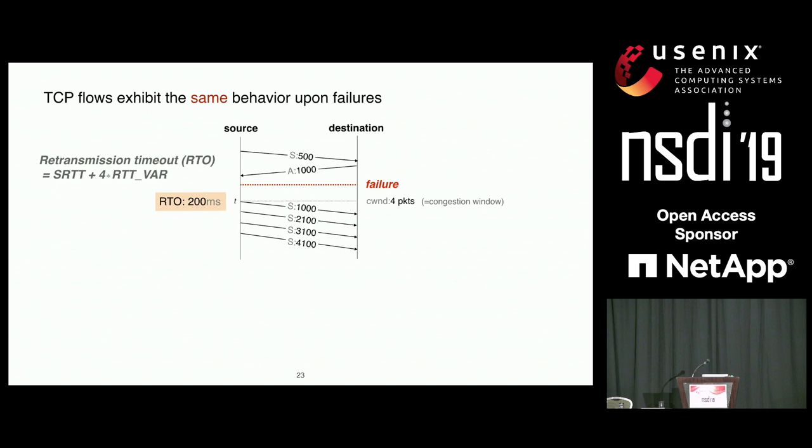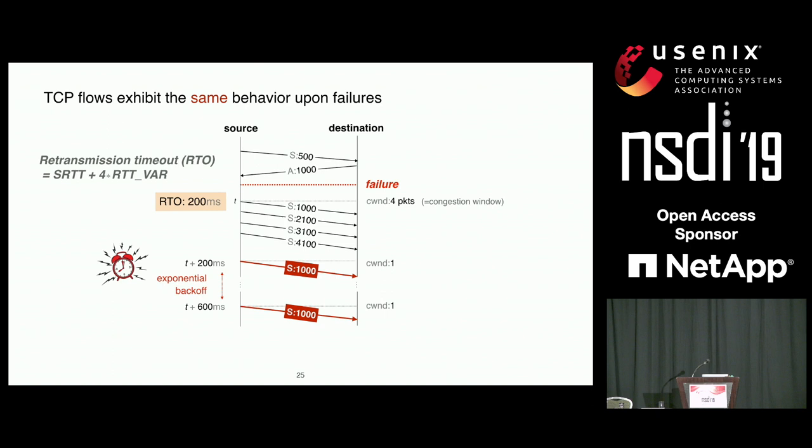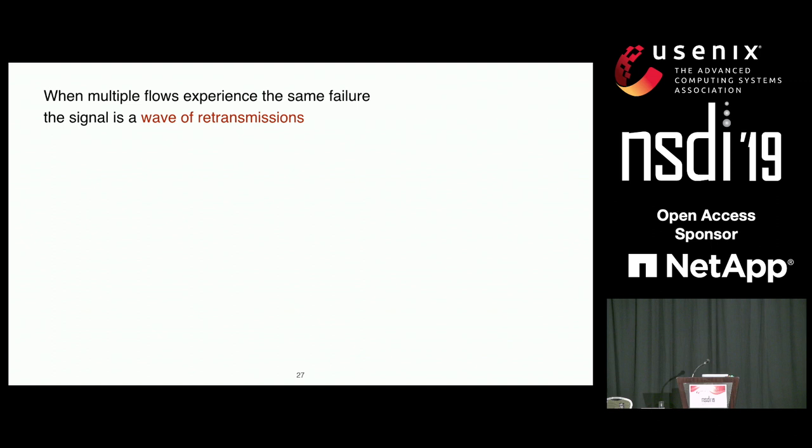If the source doesn't receive any acknowledgment, the retransmission timer will eventually expire, triggering the source to retransmit the first unacknowledged packet — and this again and again, following an exponential back-off. This behavior is shared between all TCP flows, which means that when multiple flows are all affected by the same failure, we get a kind of wave of retransmissions.